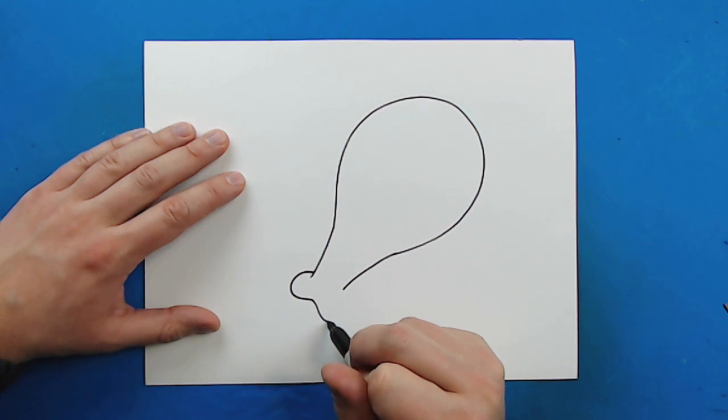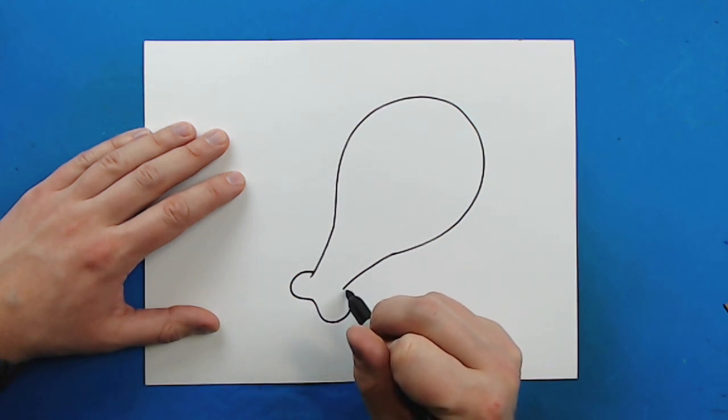And then right here, I'm going to draw a line that's going to go down, and then it's going to curve up, and I'm going to bring it right to here.